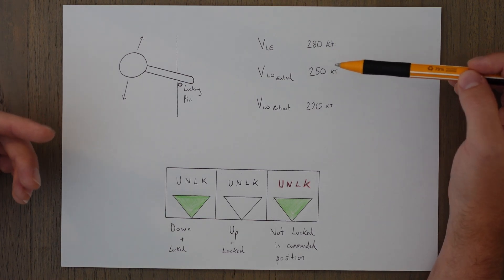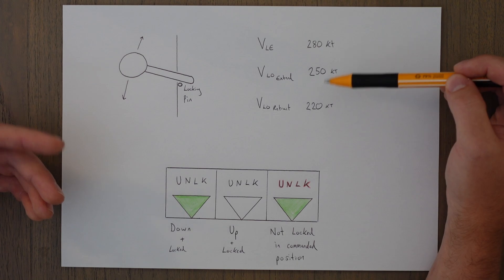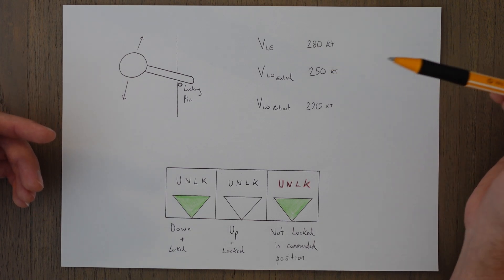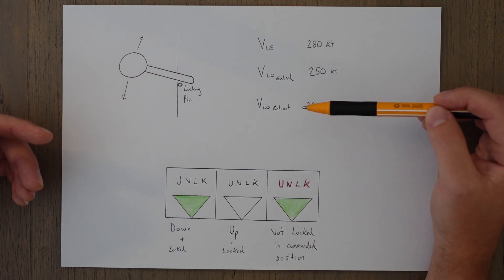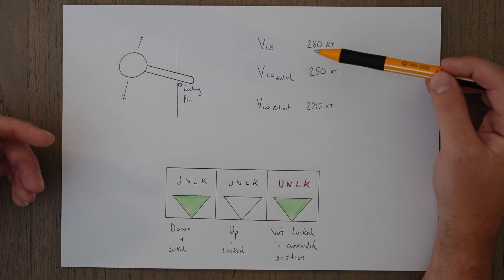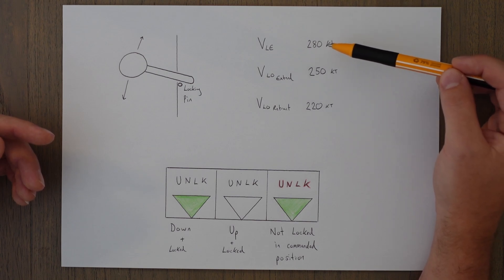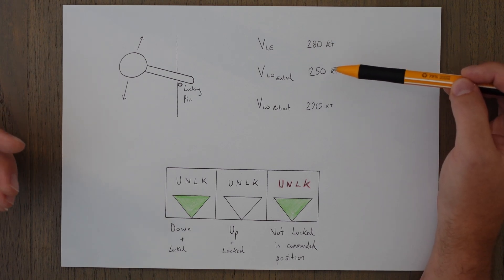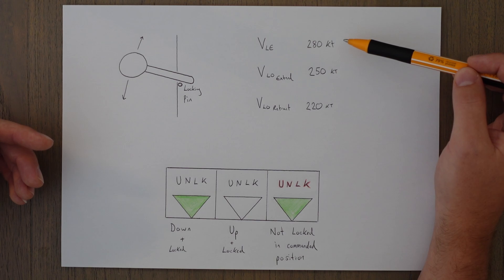VLO is the maximum speed to operate the landing gear, and sometimes this is broken up into two speeds as well—one for extension and one for retraction.